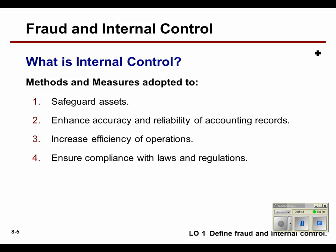So what is internal control? Control of what? Again, our cash, our inventory, and our supplies. There are methods and measures — you basically need to safeguard your assets, keep those assets in house, set up policies, and set up different ways to make sure your assets are where they say they are. Your accounting records need to be accurate. What if your accounting person is the corrupt one?